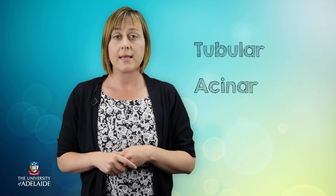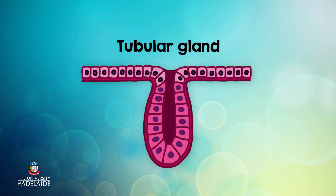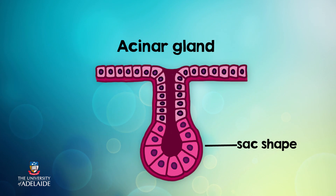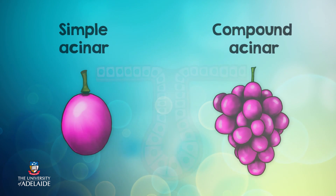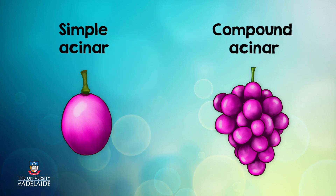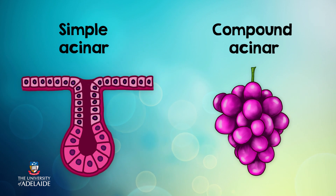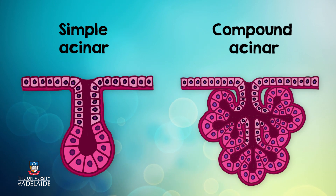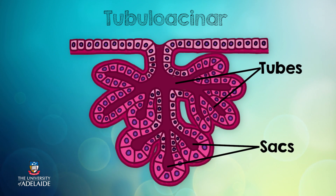Multicellular glands can also be classified based on the shape of their secretory cells. They can be tubular, or acinar, or both. Tubular glands, like the name suggests, are shaped like a tube. Acinar comes from the word acinus, which is Latin for berry, and they are berry or sac shaped. So simple acinar glands look a bit like individual grapes, while compound acinar glands look like bunches of grapes, with the stalks representing the compound ducts. If the gland contains both tubes and sacs, we call it a tubuloacinar gland.